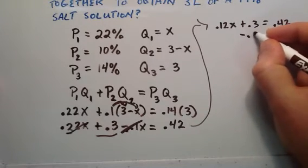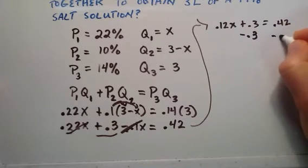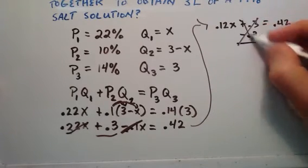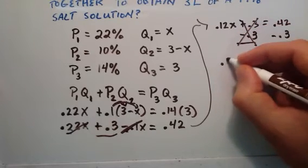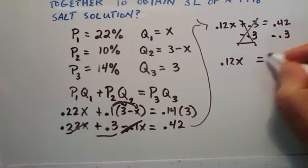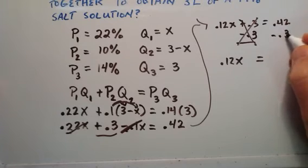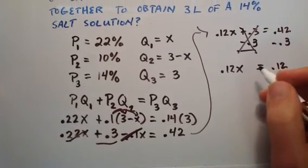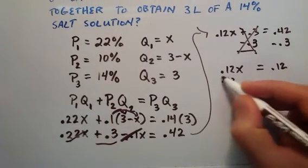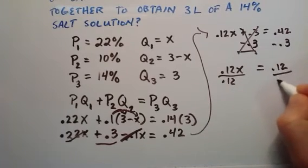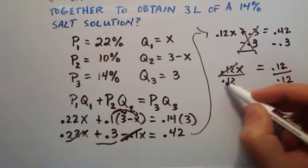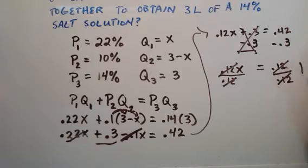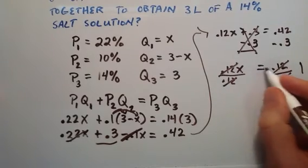Then we just need to subtract 0.3 on each side. A positive 0.3 and a negative 0.3 cancel, leaving us with just 0.12x on the left-hand side. 0.42 minus 0.3 is 0.12. Then we simply divide each side by 0.12. 0.12 divided by 0.12 cancels, so this equals 1. We have x is equal to 1.